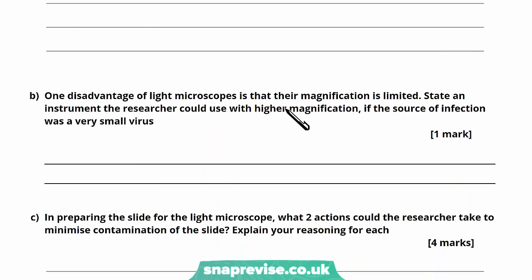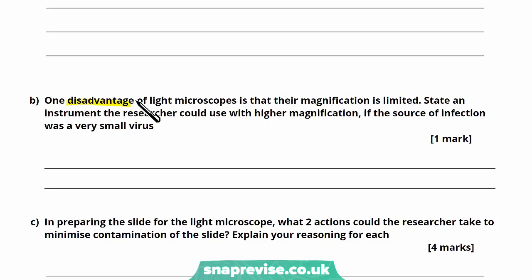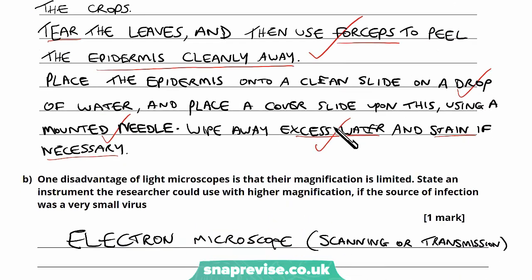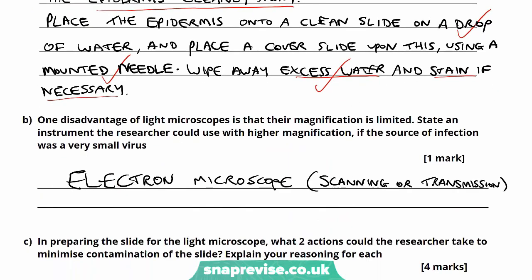The next question, Part B, says: one disadvantage of light microscopes is that their magnification is limited. State an instrument the researcher could use with higher magnification if the source of infection was a very small virus. This goes back to the background video. Light microscopes have limited magnification, but a very small virus is only really going to be picked up under an electron microscope. The answer is simply an electron microscope — you can put scanning or transmission, it doesn't really matter.